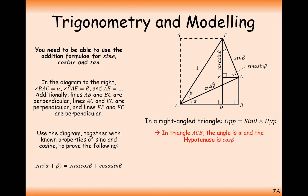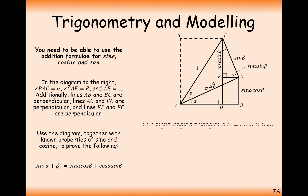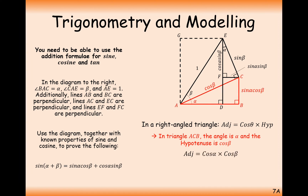The next side of the triangle we're going to label is the opposite side. We have a hypotenuse of cos β, and we're looking for the opposite side when we have an angle of α, so it's going to be sin α cos β. And the side that stretches from A to B along the bottom is the adjacent side where the angle is α with a hypotenuse of cos β, so that bottom one is going to be cos α cos β.